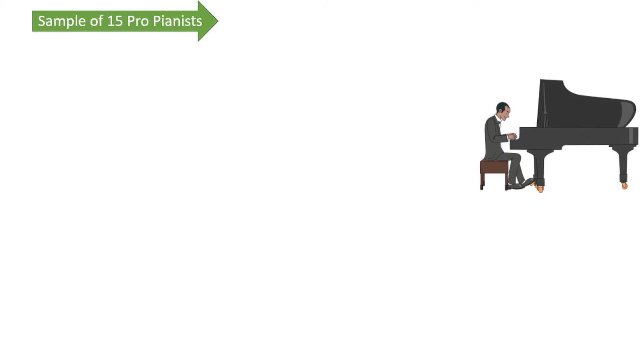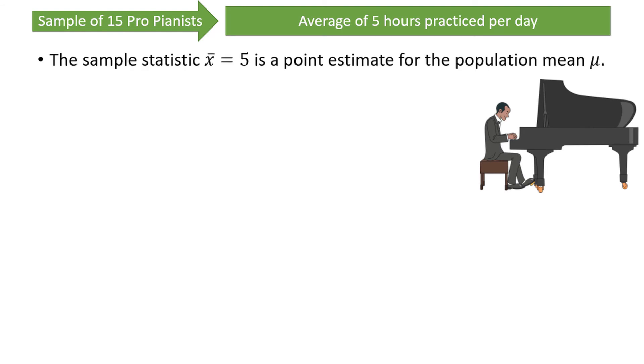For example, I might sample 15 professional pianists and find that they practice an average of 5 hours per day. 5 hours came from a sample, so that makes it a statistic, represented by x-bar, which is a point estimate for the population mean mu of daily practice time of all professional pianists. But I didn't sample all professional pianists. There are thousands or perhaps millions of professional pianists that I didn't gather data from. There is a very high chance that this estimate is not exactly right. It might be too large or too small.